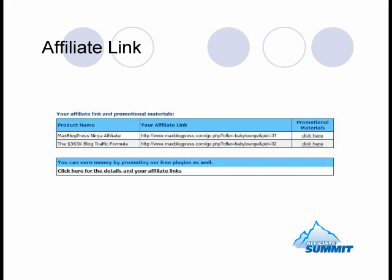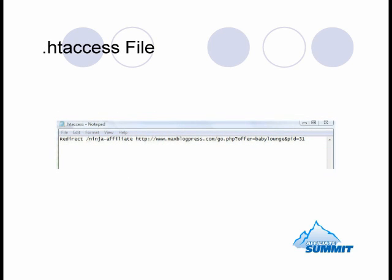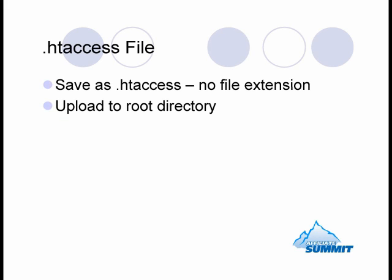Copy that link, then you'll create the htaccess file. Just open up Notepad — I'm not sure what the equivalent is on a Mac, but on a PC, just open up Notepad. In a brand new document, type 'redirect', then slash whatever you want to call the redirect file — in this case I just call it ninja-affiliate. After that, put the URL of the affiliate link. Save this Notepad file as .htaccess with no file extension — just that name. If you have .htaccess.txt, it's not going to work.